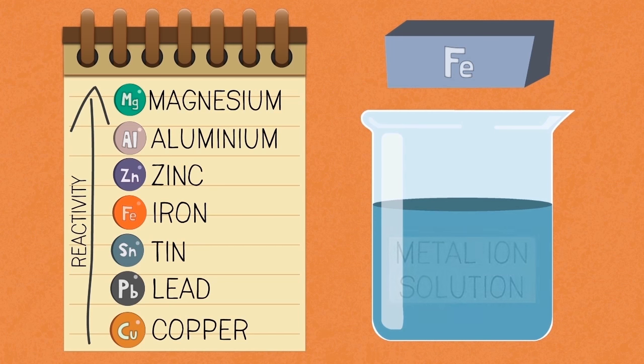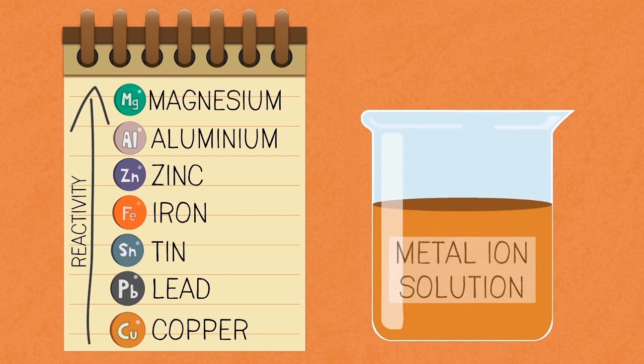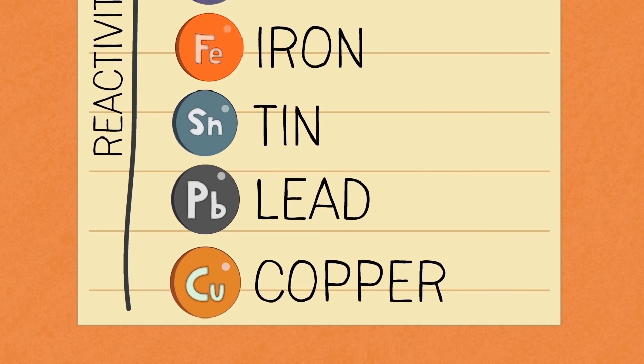The correct answer is that iron will displace any of the metals from a solution of its ions if that metal is underneath iron in the reactivity series. So iron will displace tin, lead and copper cations from solutions of their counter ions.